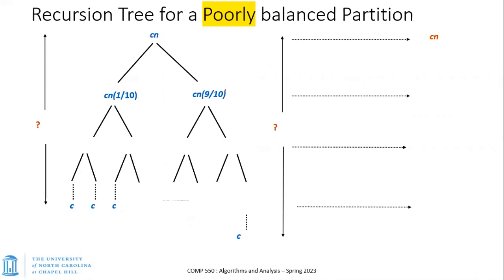Let's look at a poorly balanced scenario where the pivot is not completely at the extreme end but close to it — the two sub-arrays are lopsided, one being 90% of the original and the other just 10%. Now, should this be closer to the worst case Θ(n²) or to the best case n log n in asymptotic analysis?